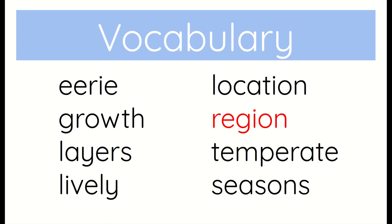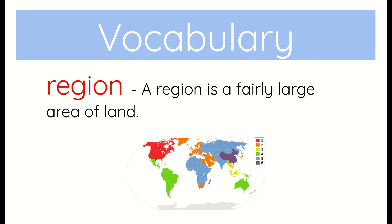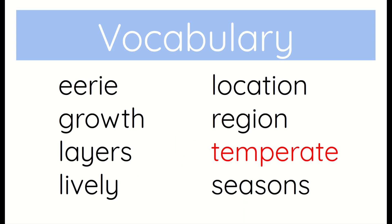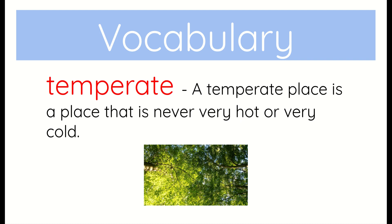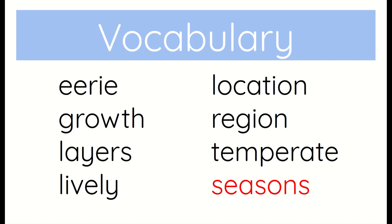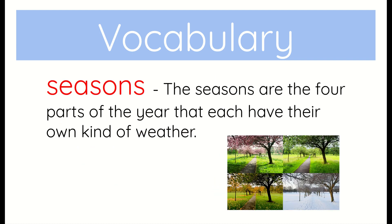Region — a region is a fairly large area of land. Temperate — a temperate place is a place that is never very hot or very cold. Seasons — the seasons are the four parts of the year that each have their own kind of weather.